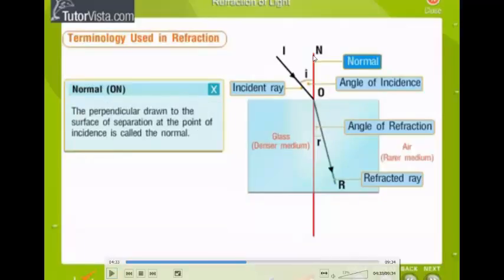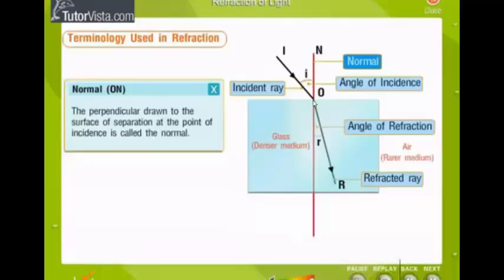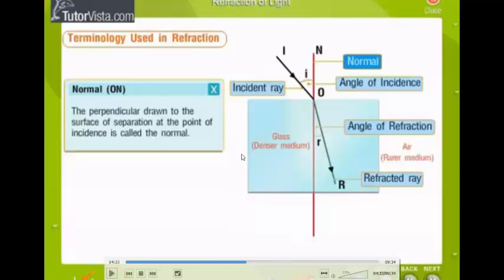The normal is basically an imaginary line that is drawn perpendicular to the surface of the separation. So, in this case, this piece of glass is rectangular, which is why we can just draw the normal straight through. But remember that the normal is always perpendicular to whichever surface the ray is hitting. So it's always perpendicular. And perpendicular means that it's at 90 degrees.